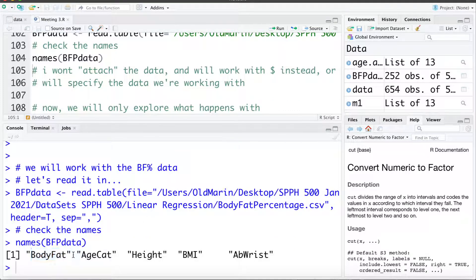that's our main outcome variable, as well as the age category, the height, the BMI, and abris circumference which is another measure of body size similar to BMI. For the sake of not getting things messy I'm not going to attach the data and I'll either work with the dollar signs or specifying the data that we're working with.